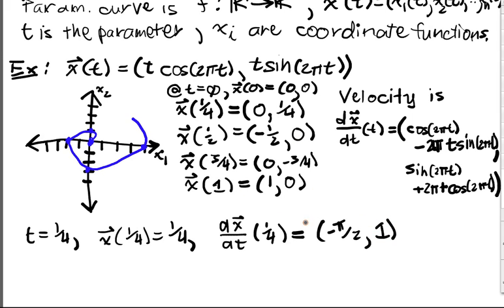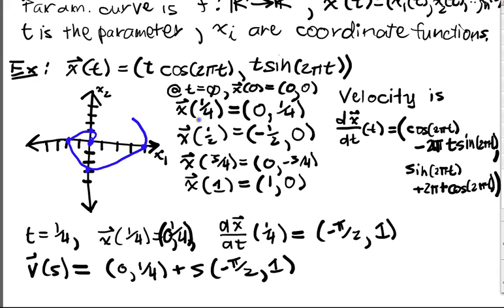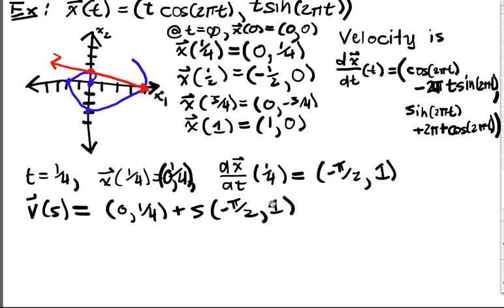And this is a vector, and the tangent line at this point then... this is a point on the line, and this is the direction. And so my tangent line at this point, we'll call it v of s now so that we don't confuse the parameter we have for the curve, is going to be (0, 1/4) plus s times my direction vector (-π/2, 1). And if you draw this, it starts at 1/4, and it's going to be exactly tangent to this curve. It's going to basically kiss the curve at that point. So it tells us the velocity, and it also tells us the tangent line to this curve at that point.